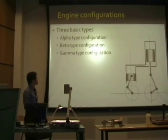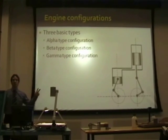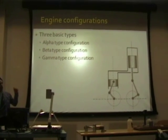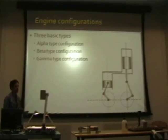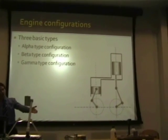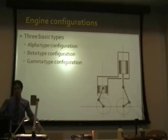Engine configurations: there are three basic types — your alpha, your beta, and your gamma. This is a gamma-type Stirling engine.